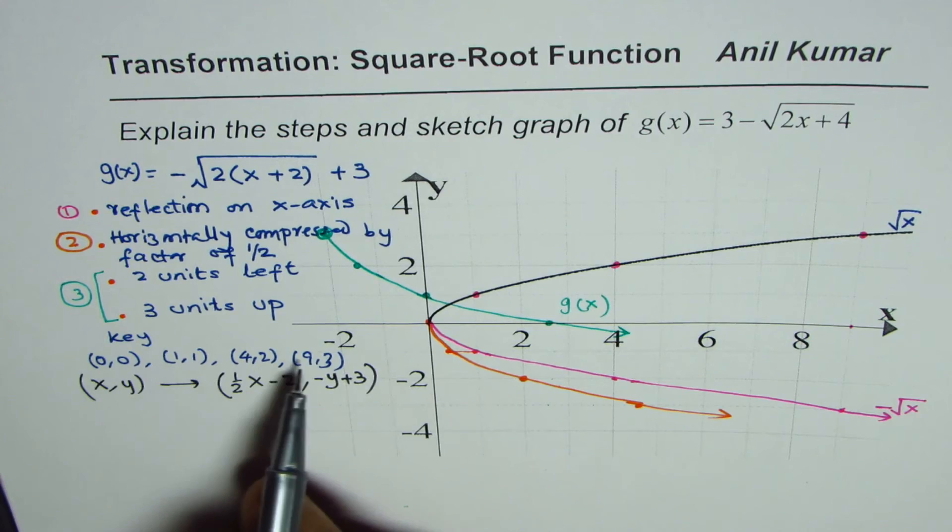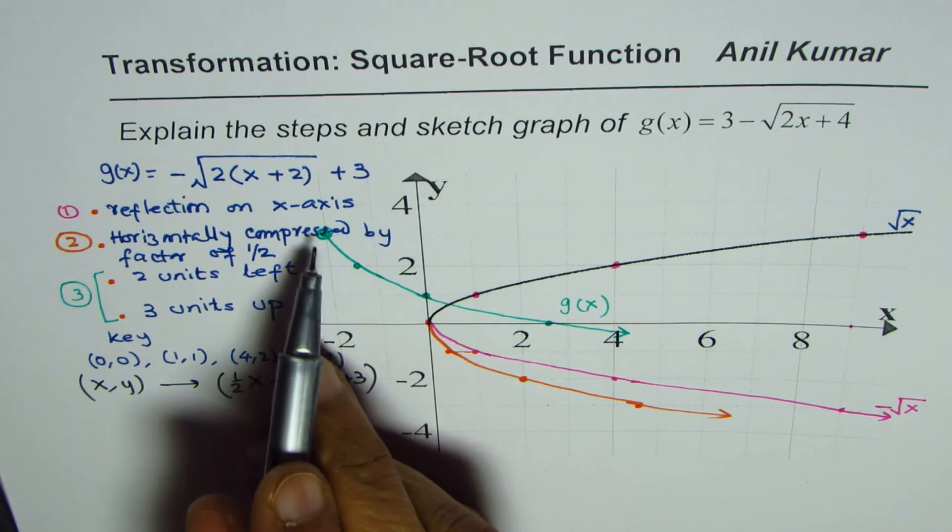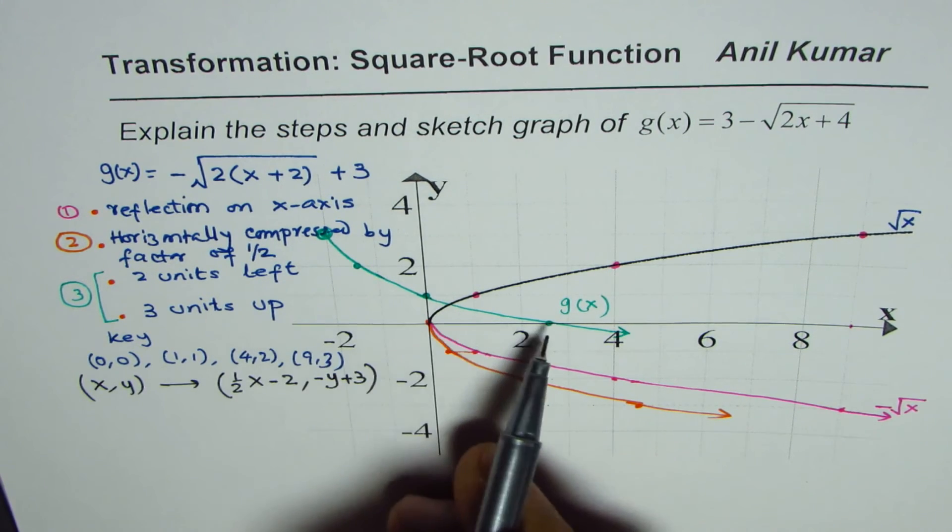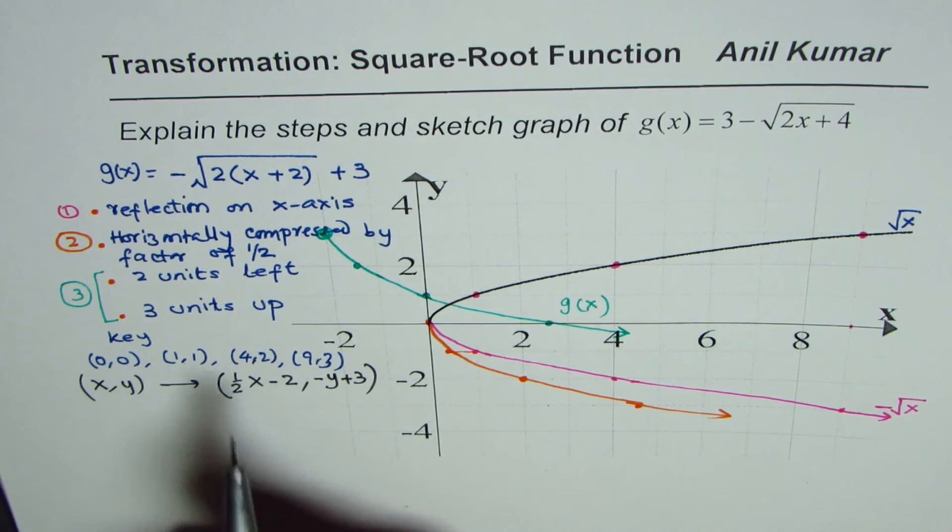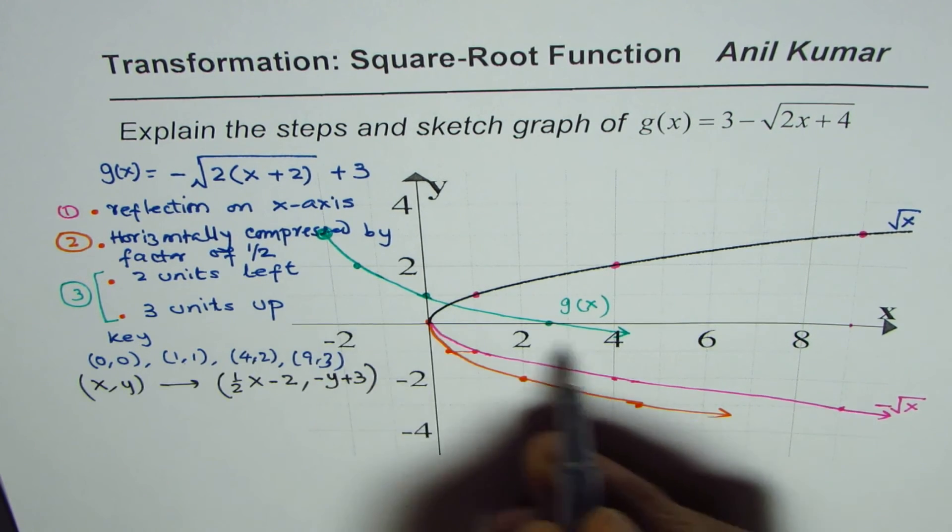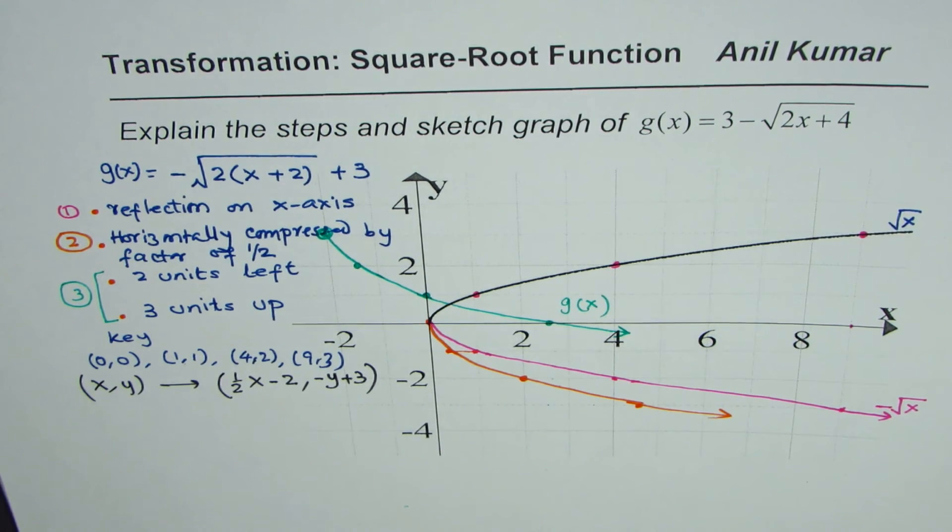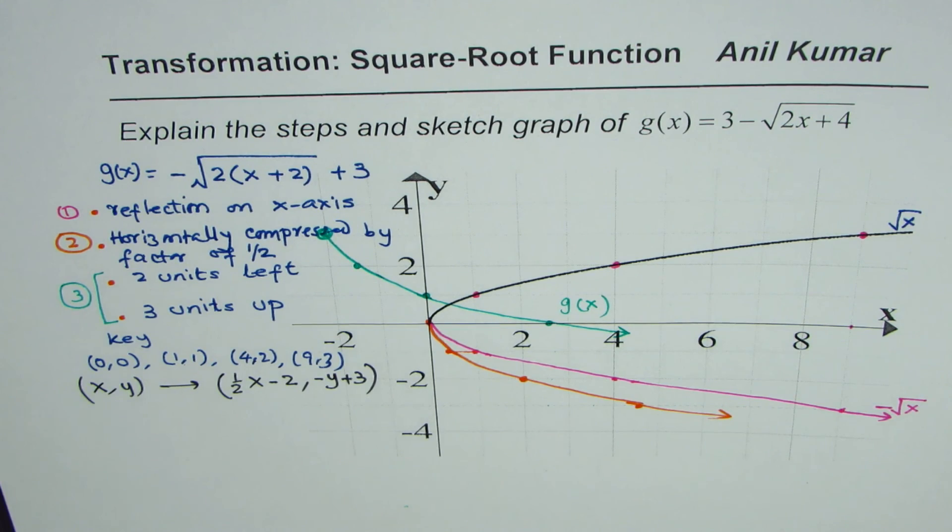So you can perform this operation on these points, get the new points, and you will find that these are the transformed points from the key points, or the image of these key points. Then you can join them to sketch. So I'll leave this part for calculating and then getting to the final transform function for you as an exercise. I hope that helps. Thank you and all the best.